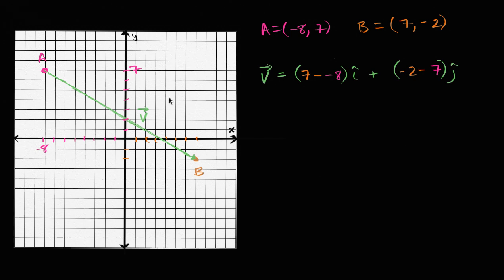And so what does this give us? Well, seven minus negative eight, that's the same thing as seven plus eight, so that's going to be equal to 15. So we get 15 times i, 15i plus—and negative two minus seven, that is negative nine. So I could say plus negative 9j, or I could just say minus 9j.